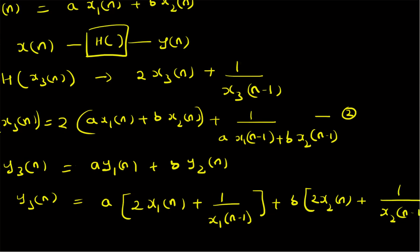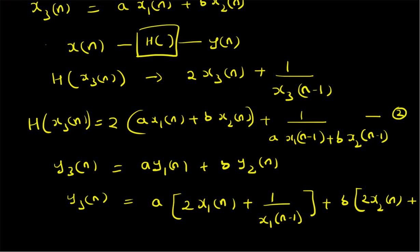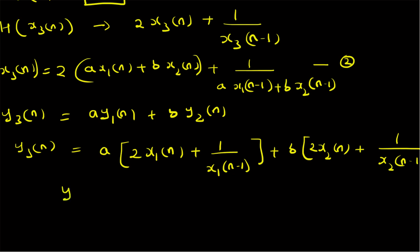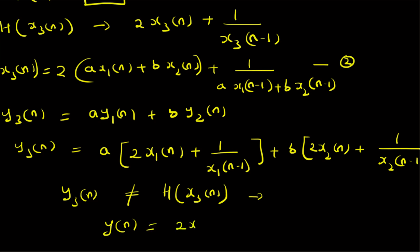When we compare y3(n) with the output h(x3(n)), we can clearly see that they are not equal. The first terms — 2a·x1(n) + 2b·x2(n) — are the same, but the non-linear part differs: here we have 1 by (a·x1(n-1) + b·x2(n-1)), whereas y3(n) has a times 1/x1(n-1) plus b times 1/x2(n-1). Because of this, the system is non-linear. Therefore y3(n) is not equal to h(x3(n)), meaning the system y(n) = 2x(n) + 1/x(n-1) is a non-linear system.